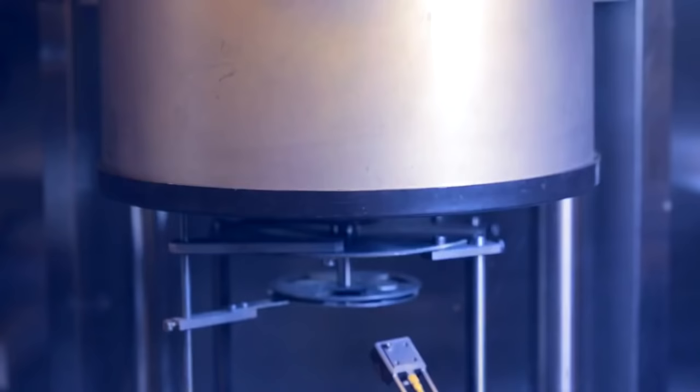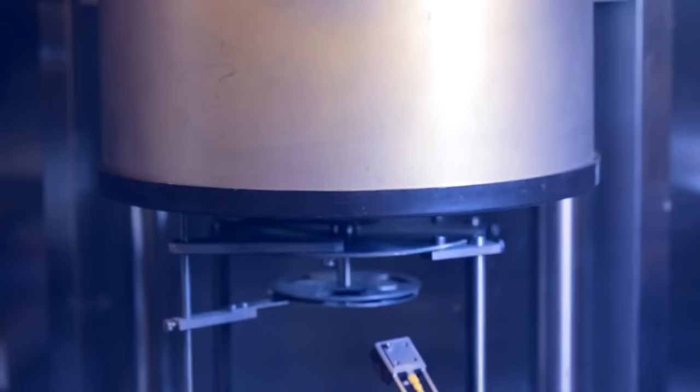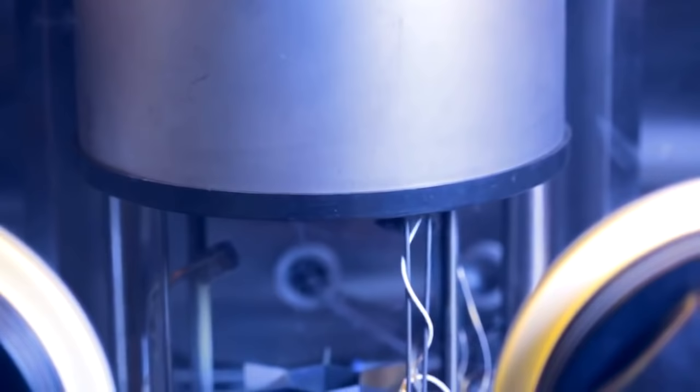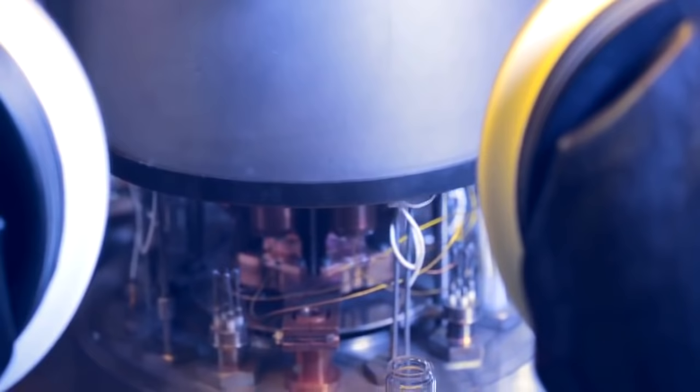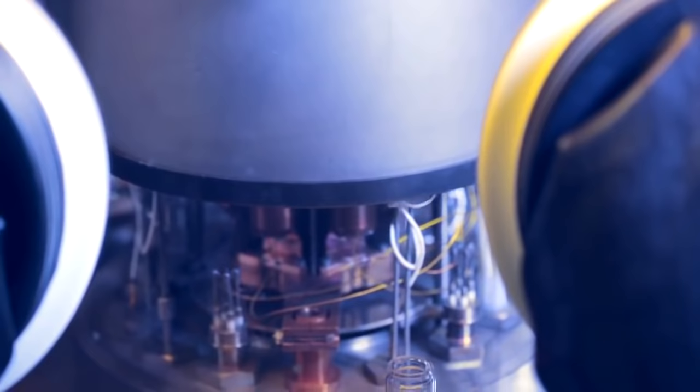We do this process by vacuum evaporation in a clean room at ICMOL, the Instituto de Ciencia Molecular. The vacuum evaporation of TPB allows us to obtain very clean and uniform coatings on the silicon PMs, which makes them able to record the xenon scintillation light and perform the tracking function in the TPC.